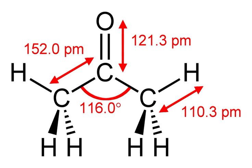Acetone, or propanone, is the organic compound with the formula (CH3)2CO. It is a colorless, volatile, flammable liquid, and is the simplest and smallest ketone.